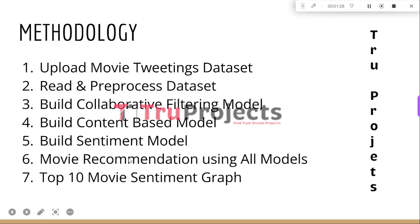These are the modules developed to build this project. The first module is Upload the Movie Tweeting Dataset. In this module, we upload the Movie Tweeting dataset, which is an advanced version of the MovieLens dataset. The dataset contains movie details and tweets from users related to movies, and will be used for building different models and the recommendation system.